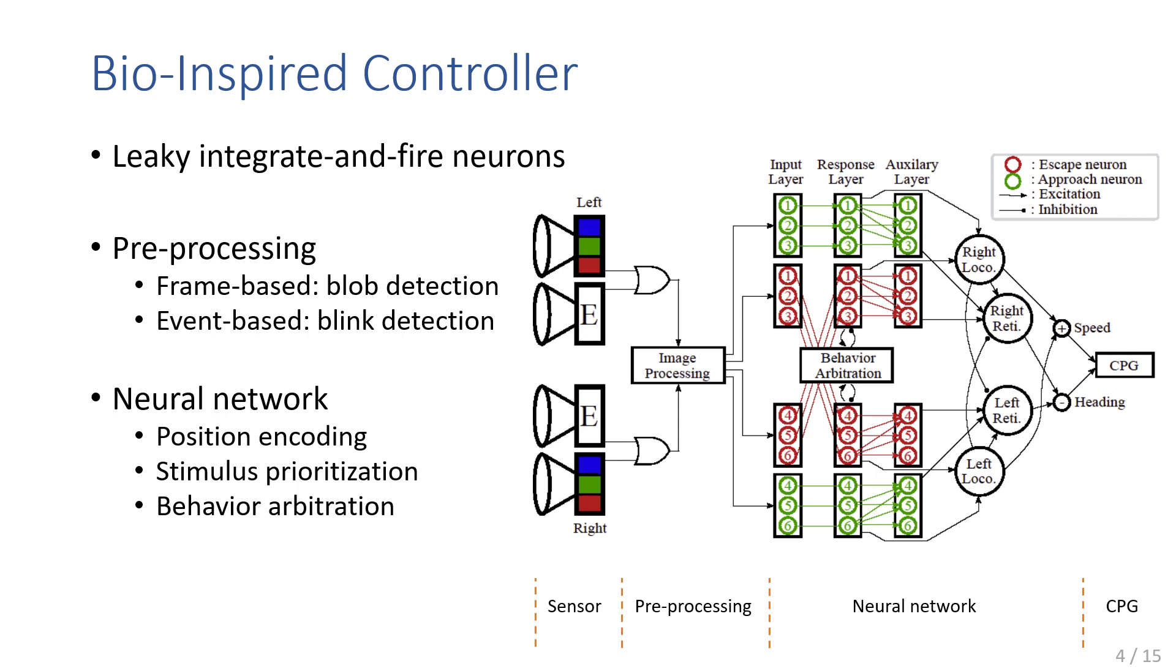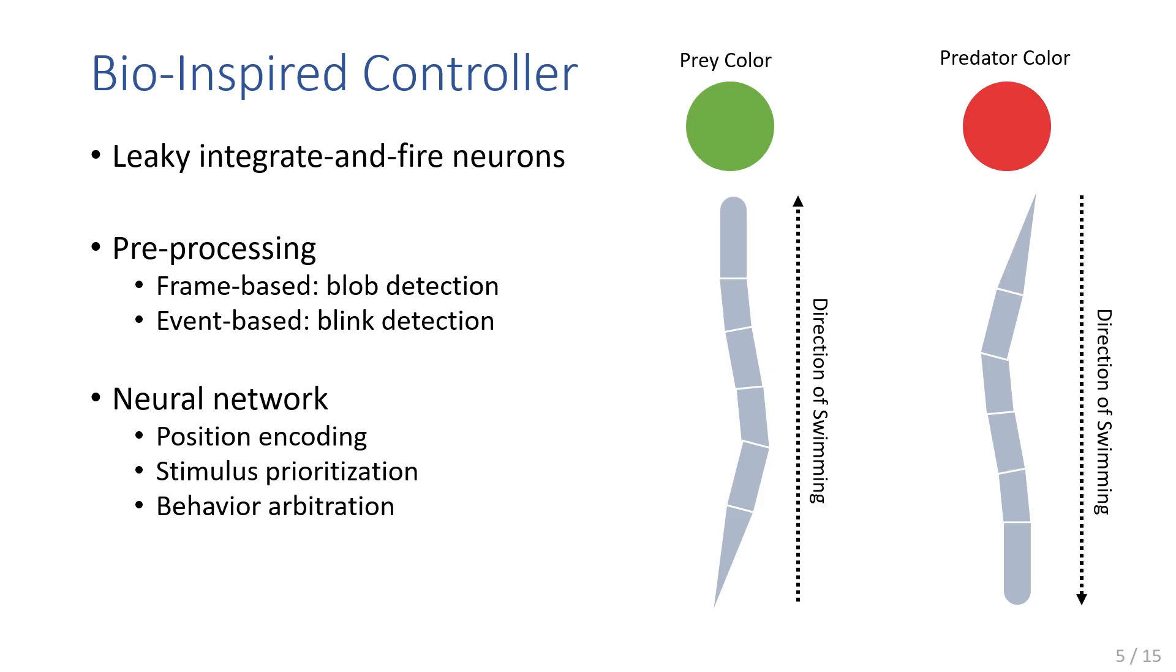Image capture was performed using both RGB frame-based cameras and event-based alternatives. Features were extracted through preprocessing for both camera types. For frame-based cameras, a colored blob detection algorithm identified green blobs as prey and red blobs as predators, estimating size and position within the camera's field of view. In contrast, a much simpler algorithm preprocessed event-based data. Blink detection discriminated between prey and predators by assigning different flashing frequencies. Estimating size and position wasn't needed, as detected pixels directly stimulated the appropriate input neurons.